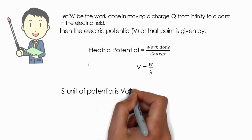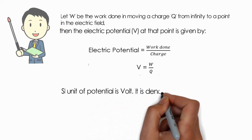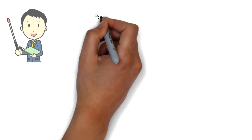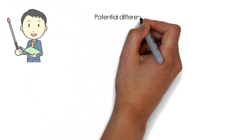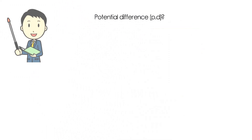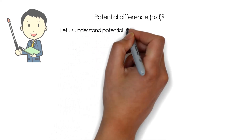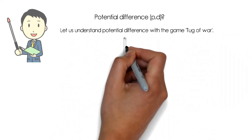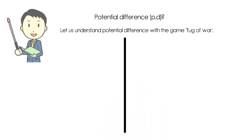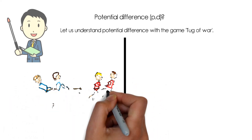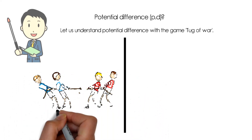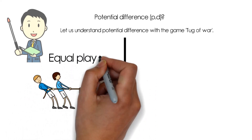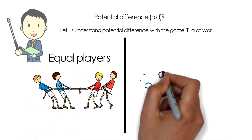Now let us dive into the new topic: potential difference. To understand this, let us consider the game tug of war. There are two teams — on the left two players and on the right two players — the same number of players. If both teams have the same energy, that means the same potential. Neither team will win because both have an equal number of players and the same amount of energy.